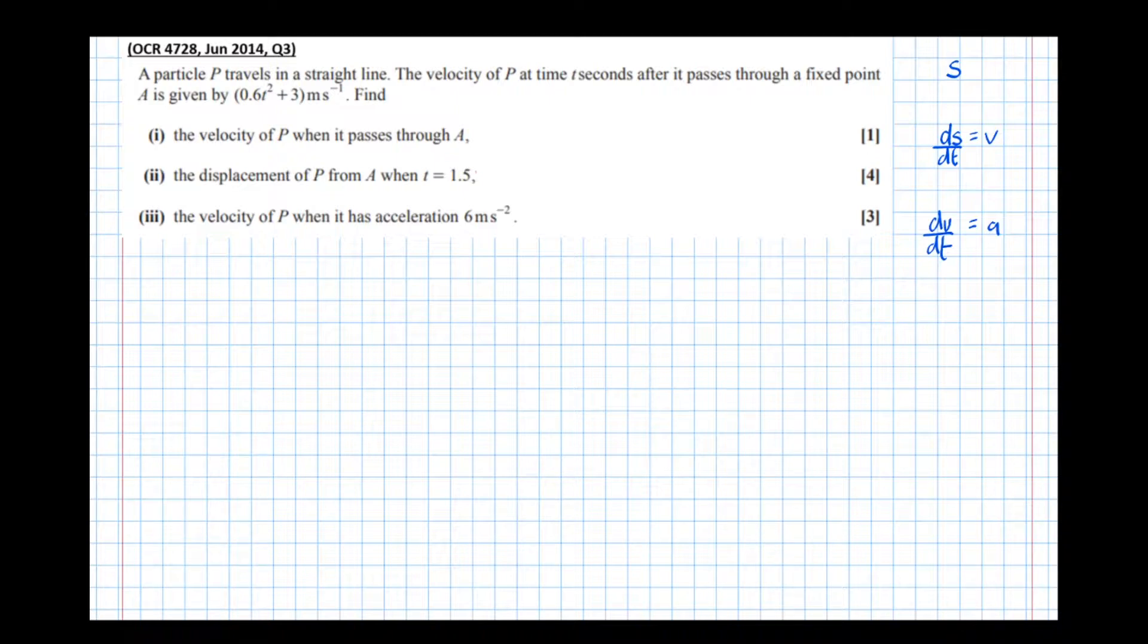So if we differentiate displacement we get velocity. If we differentiate velocity we get acceleration. If we integrate, i.e. work backwards, acceleration we get velocity, and if we integrate velocity we get back to displacement. So differentiating with respect to time gets us to velocity, differentiating again gets us to acceleration. Integrating with respect to time gets us back up to velocity, and integrating with respect to time gets us back to displacement.